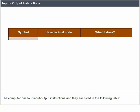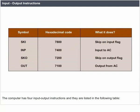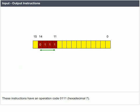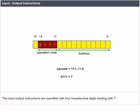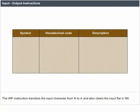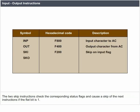The computer has four input-output instructions with operation code 0111 (hexadecimal 7), each containing a 1 in only one of the remaining 12 bits of the instruction word. The INP instruction transfers the input character from the input device to register A and also clears the input flag. The OUT instruction transfers an 8-bit character code from A into the output register and clears the output flag. The two skip instructions check the corresponding status flags and cause a skip of the next instruction if the flag bit is 1.